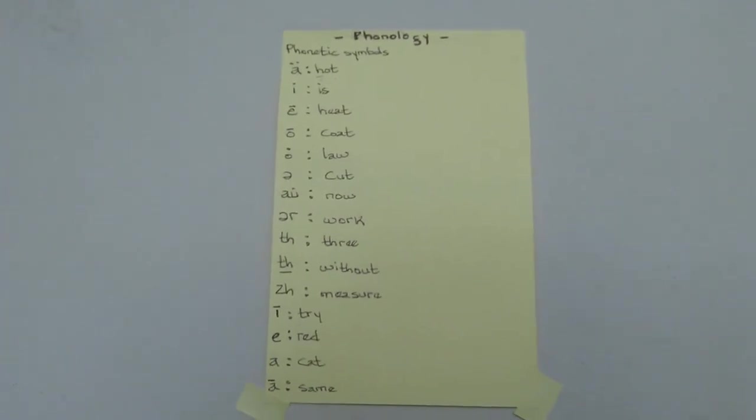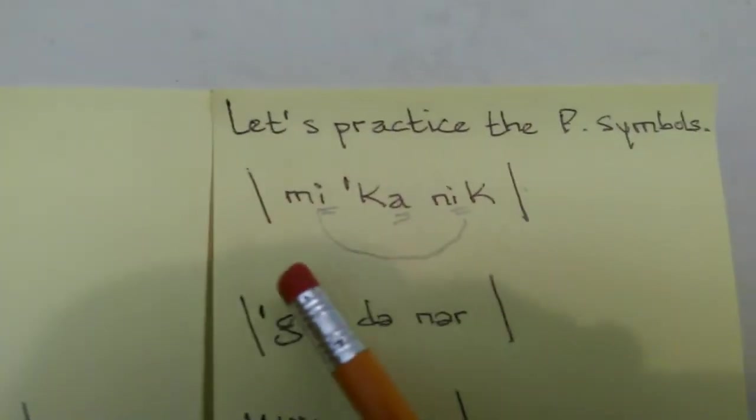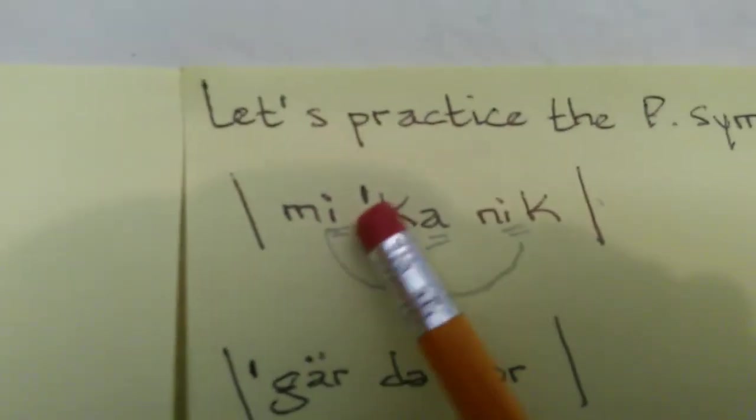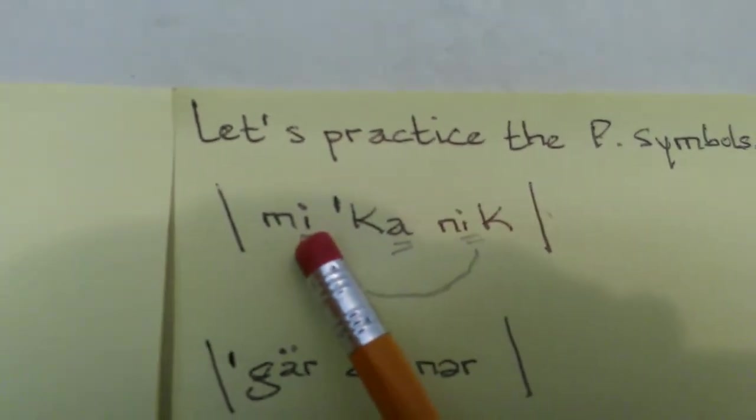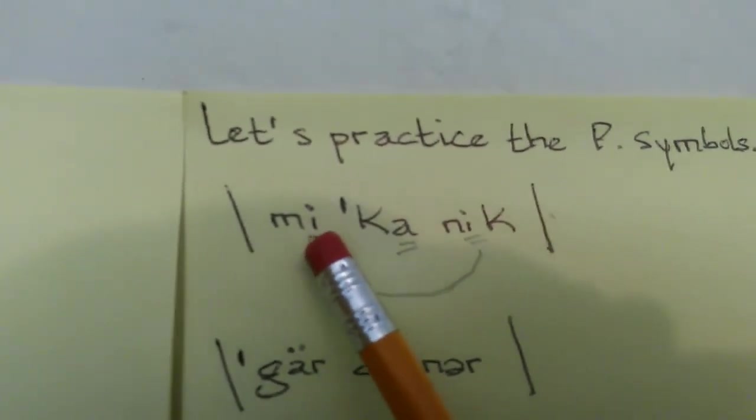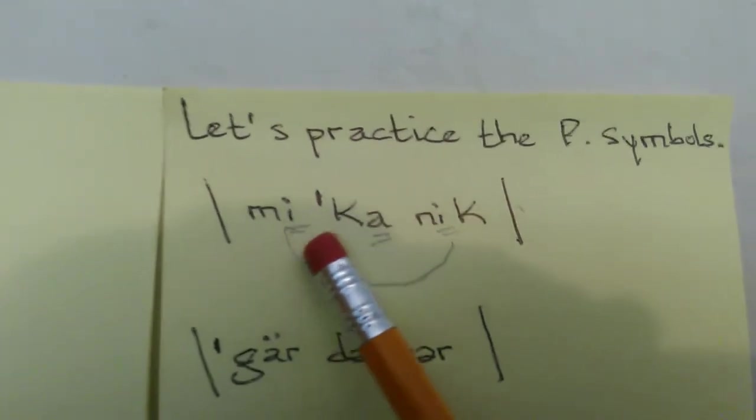Let's practice the phonology. If you take a look here, you see this symbol, the 'i' with the dot. So phonetically the symbol is 'i', that one is 'a', and that one is 'a'.